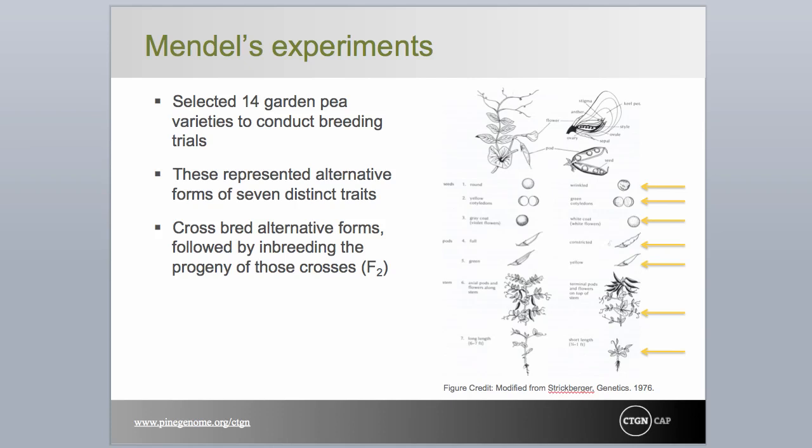Born to a poor farming family in 1822, Mendel joined a monastery so that he may obtain an education. He started his breeding experiments in 1857 in the monastery gardens at Brno. He apparently selected the garden pea carefully, since seedsmen had collected many known varieties and the plant was easy to cross, though it is naturally a self-fertile plant. His success, ultimately, was a function of many factors.